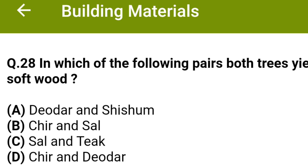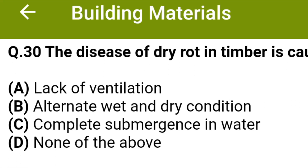In which of the following pairs do both trees yield softwood? Option A deodar and sisham, Option B chir and sal, Option C sal and teak, Option D chir and deodar. The correct answer is Option D, chir and deodar. The disease of dry rot in timber is caused by Option A lack of ventilation, Option B alternate wet and dry conditions, Option C complete submergence in water, Option D none of the above. The correct answer is Option A, lack of ventilation.